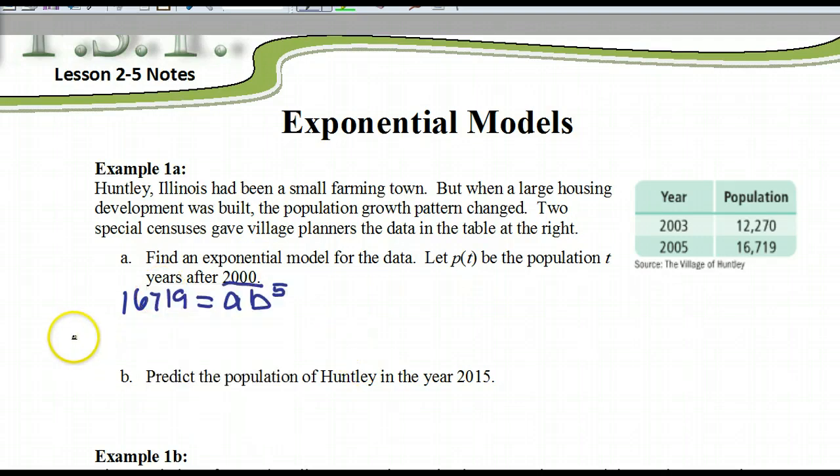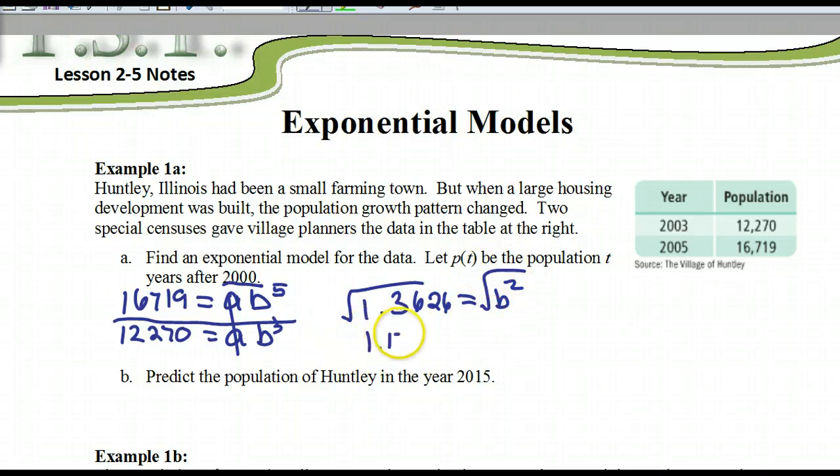I'm going to divide that by the second equation, which is 12,270, and that's going to equal A, B to the 3rd power. So when I do that, my A's cancel, and then 16,719 divided by 12,270. I got 1.3626 equals B squared. Then we do the square root to find the square root of B. And then you should have 1.17 equals B.